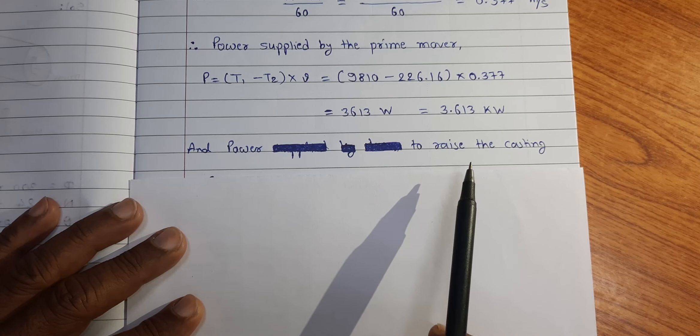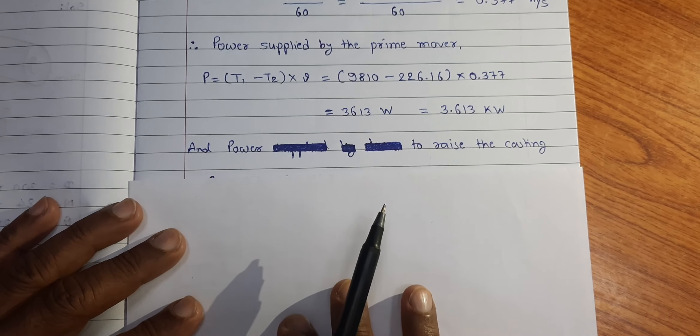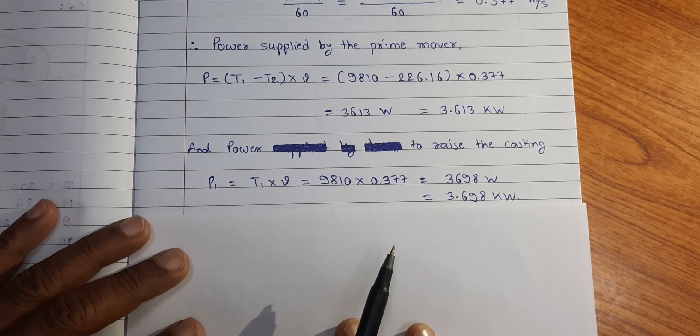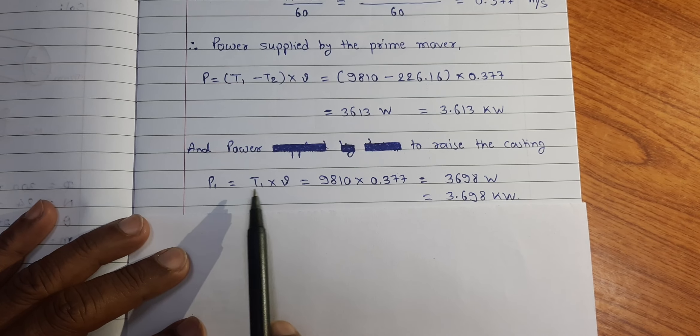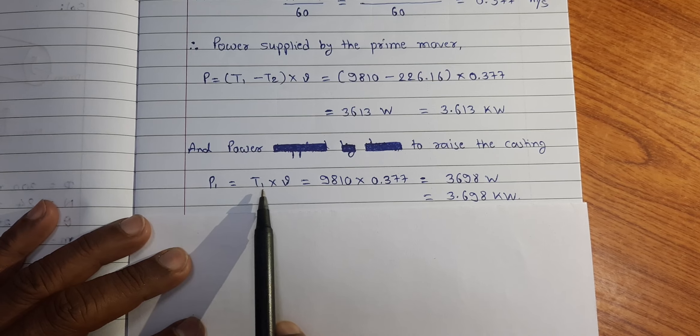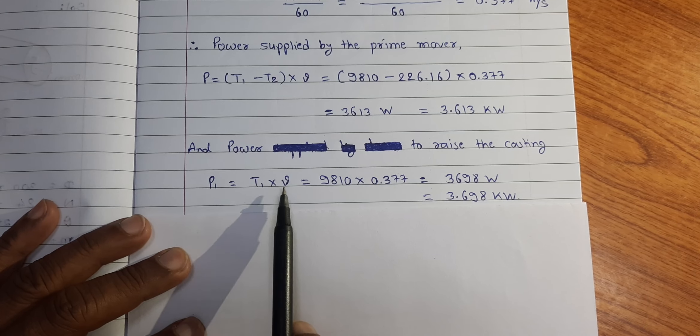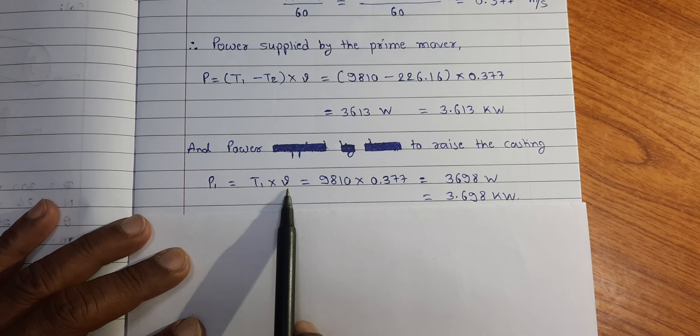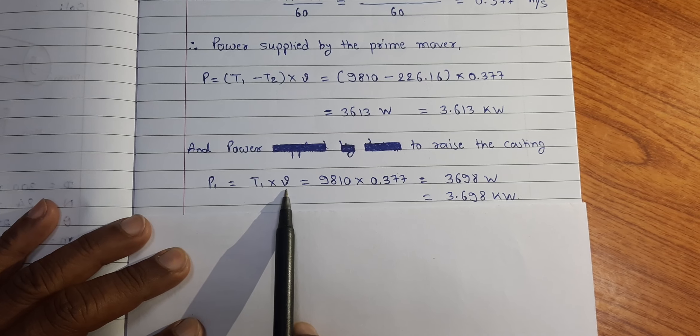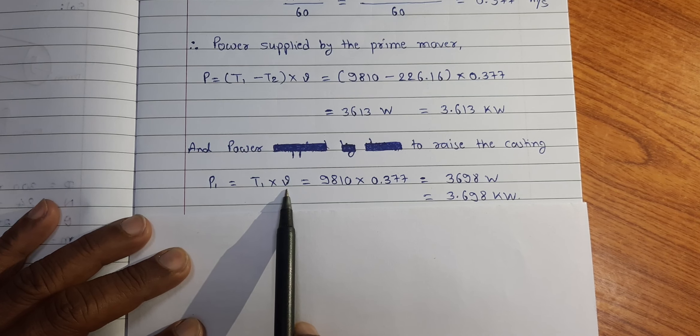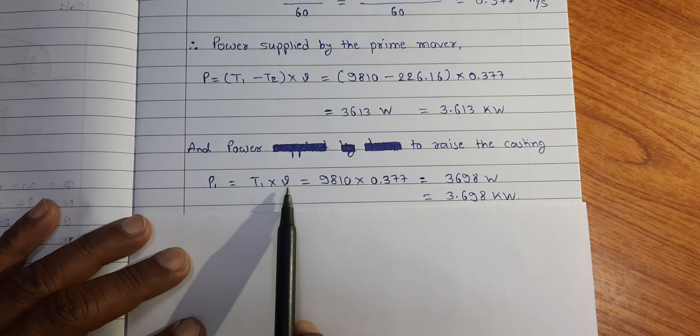And power to raise the casting is given by P1 is equal to tension on tight side which is used to raise the casting into velocity of casting. And velocity of casting will be equal to the peripheral velocity of the drum.